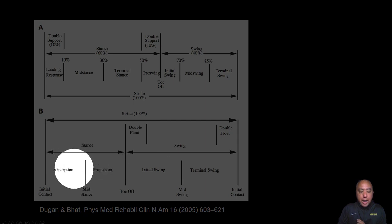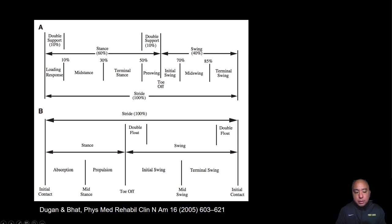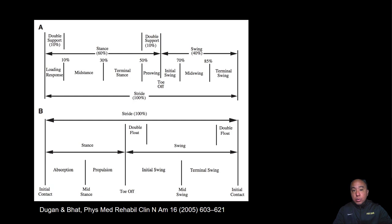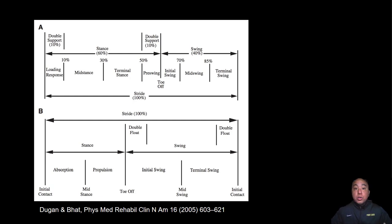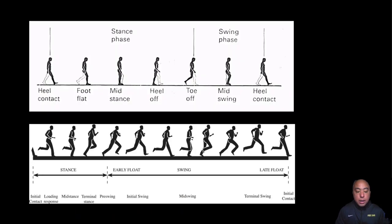During the stance phase, it's fairly straightforward: the first half is absorption — power absorption — and the runner lands and eccentrically fires muscles to absorb the shock from landing and minimize the impact force. Then there is a transition to the propulsion phase, in which the runner pushes off and toes off into the swing phase, or specifically the double float phase.